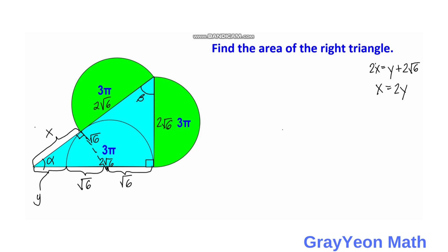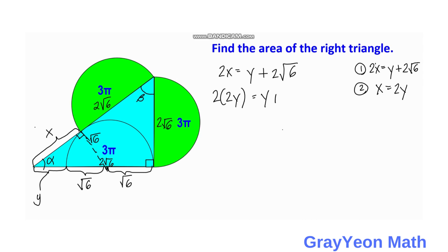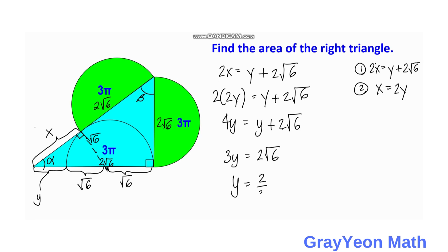Since we are looking for the area, we need the height and the base. The height is 2√6, and the base requires finding Y. Using the first equation 2X = Y + 2√6 and substituting X = 2Y, we get 4Y = Y + 2√6, so 3Y = 2√6, giving us Y = (2/3)√6.